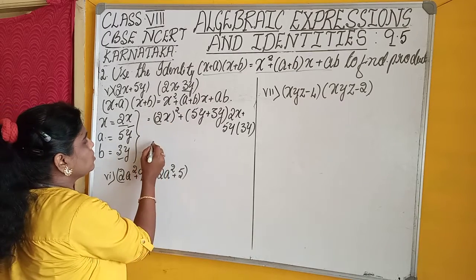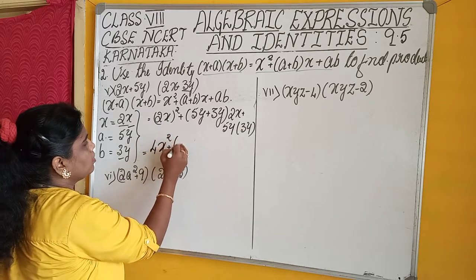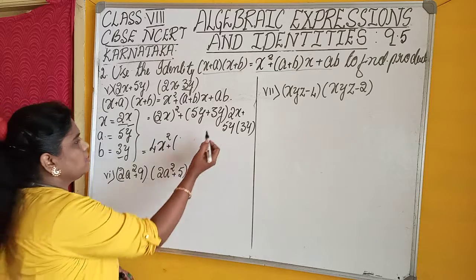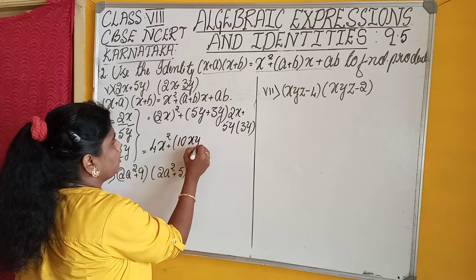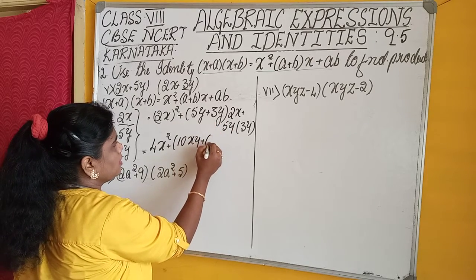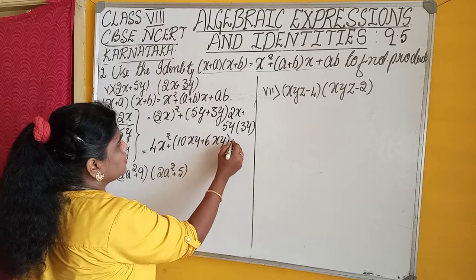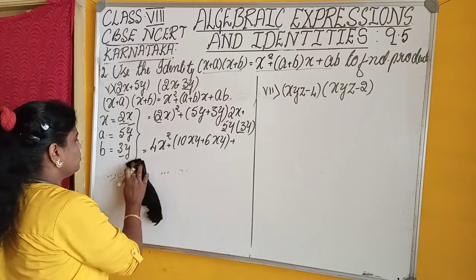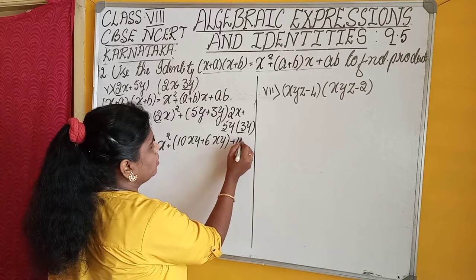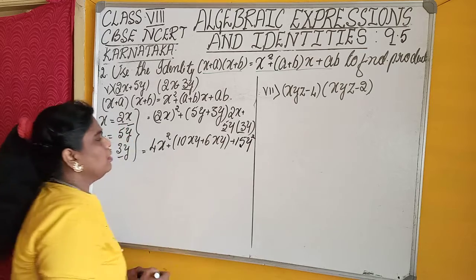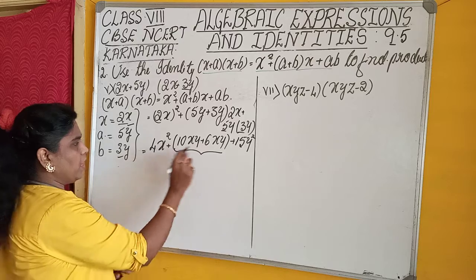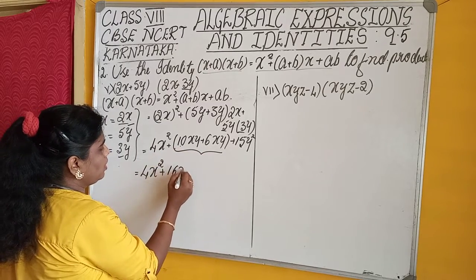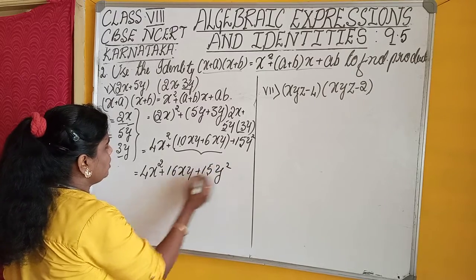In place of x we write 2x whole square, plus, in the place of a, 5y and plus 3y. That equals 5y plus 3y into 2x, plus a·b which is 5y into 3y. Simplifying: 2x whole square is 4x², plus (5y+3y) into 2x gives 10xy plus 6xy, plus 5y×3y is 15y². Adding like terms: equals 4x² + 16xy + 15y².